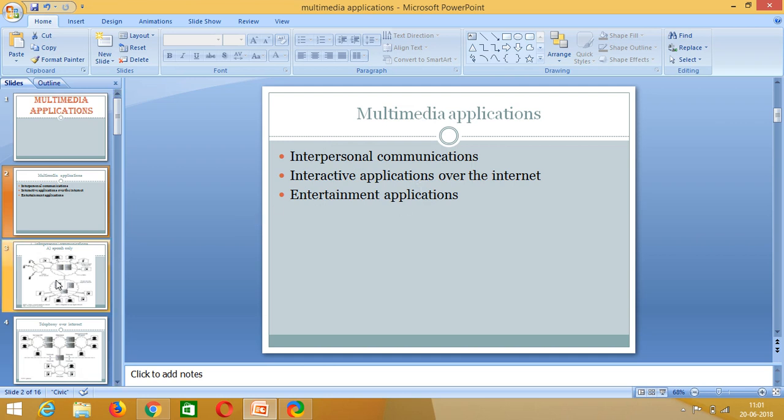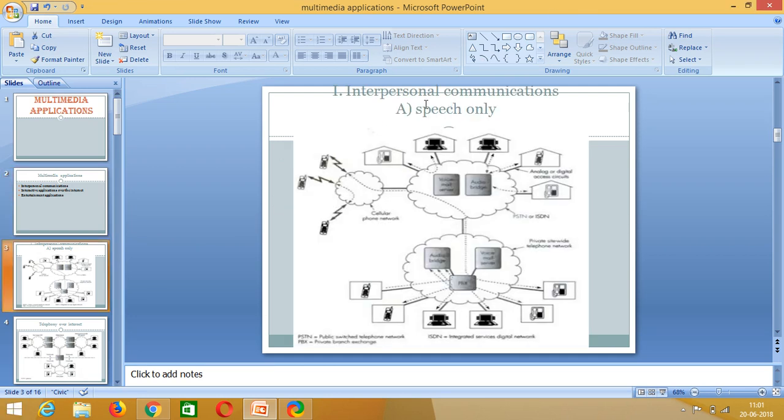The first thing we will move into is interpersonal communications. Coming to interpersonal communications, as we know most of the communication happens through voice and using speech itself. And this is a simple block diagram of speech only, that is where we will be using telephonic conversation. In the telephony conversation, it may be one to one using the telephones, or it may be a conference call. If we are using conference calls in order to connect three or more, two or more people, we will be using the central unit called the audio bridge.